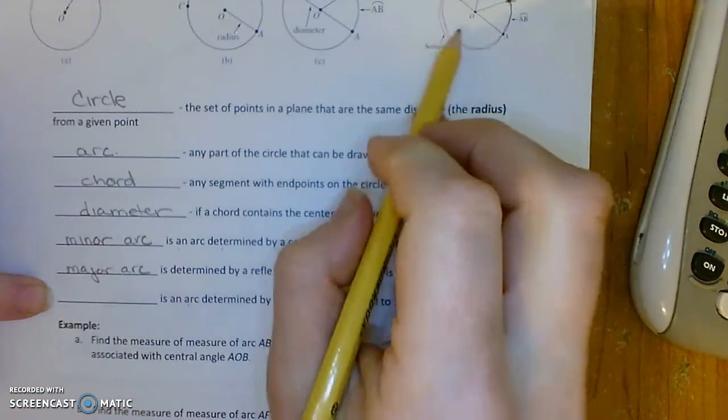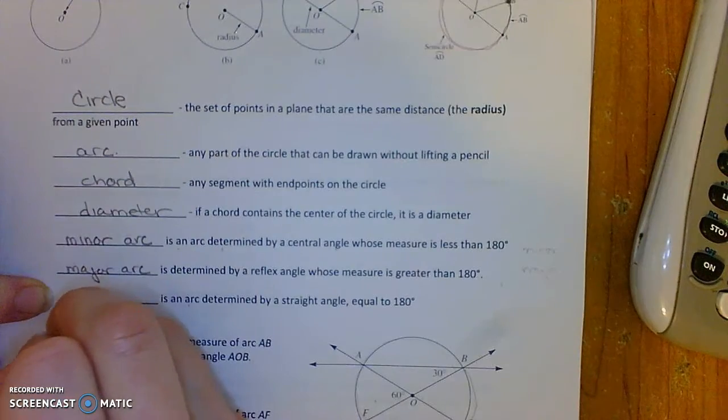And if you have an arc determined by a straight angle there, you call that a semicircle.